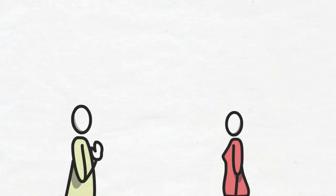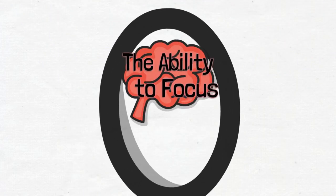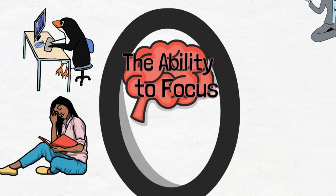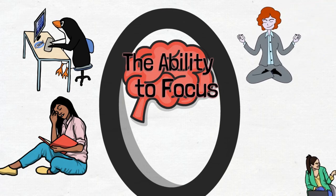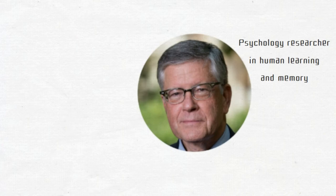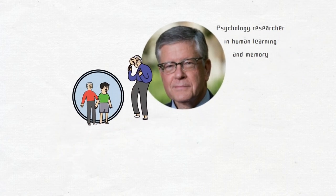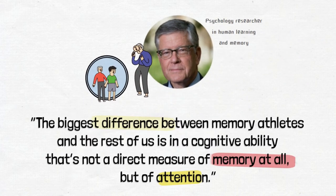The benefit of memorizing things does not end at being able to impress other people, but is also being able to focus better at things like reading a book or working on a project or meditating or even just staying in a conversation. Psychologist Henry Roediger studied memory athletes to find out what separated these people from the rest of the population and concluded that the biggest difference between memory athletes and the rest of us is in a cognitive ability that's not a direct measure of memory at all, but of attention.